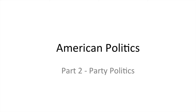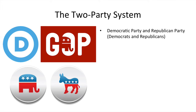Let's take a quick look at party politics in America. The first thing you need to know is the two-party system. There are two major parties in the United States: the Democratic Party and the Republican Party. When you talk about the people within them, you call them Democrats or Republicans.